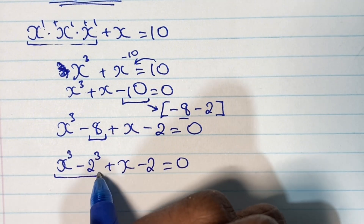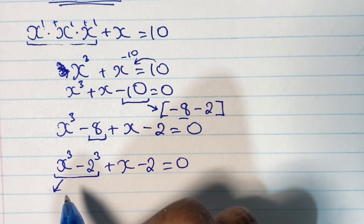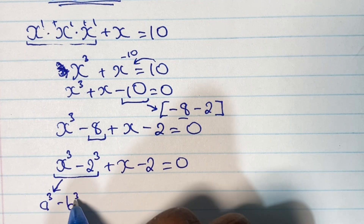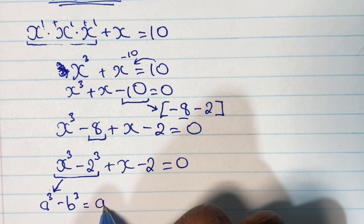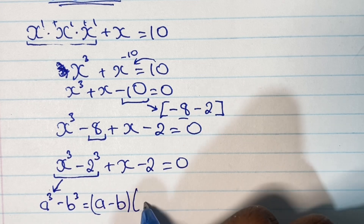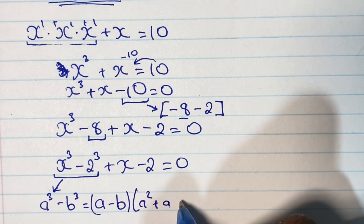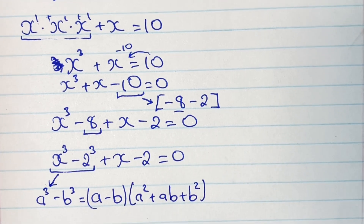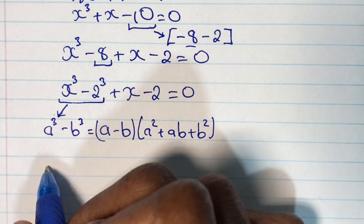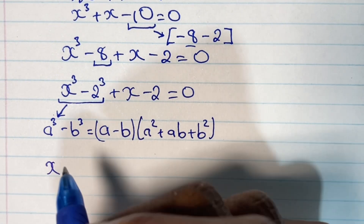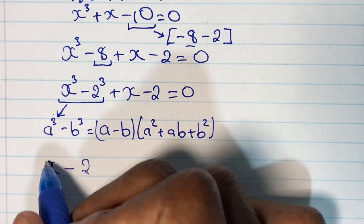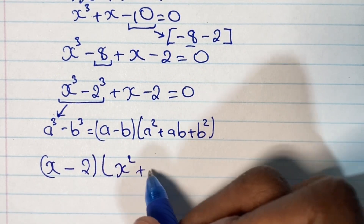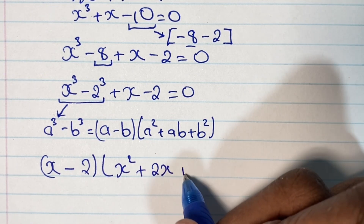Now we have x cubed minus 2 cubed, which is an example of the difference of two cubes. The rule states that a cubed minus b cubed expands to a pair of brackets: (a minus b) times (a squared plus ab plus b squared). So x cubed minus 2 cubed becomes (x minus 2) times (x squared plus 2x plus 4).